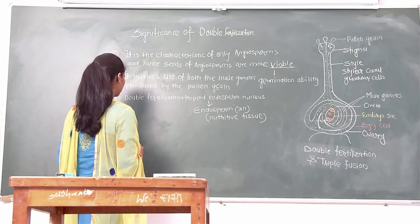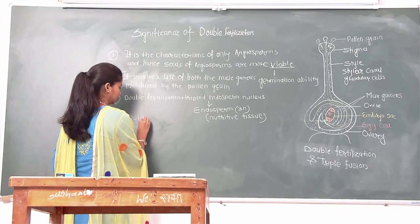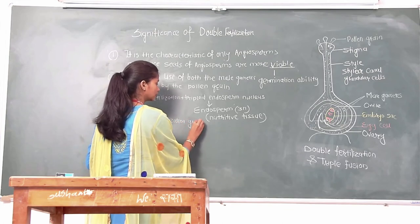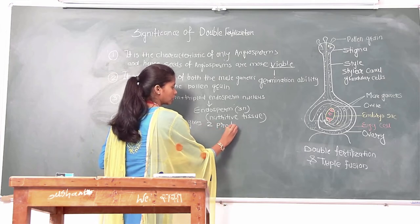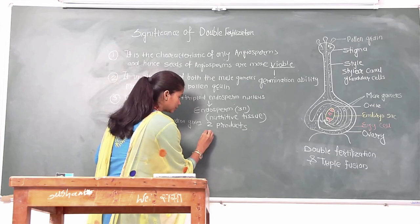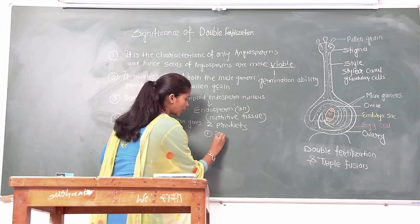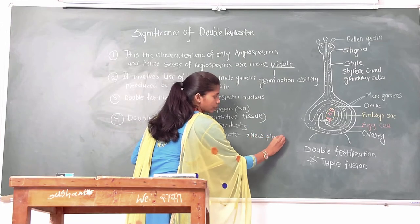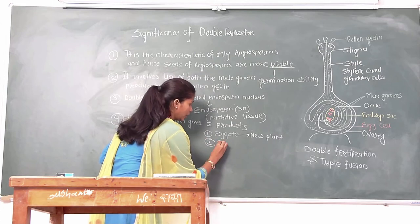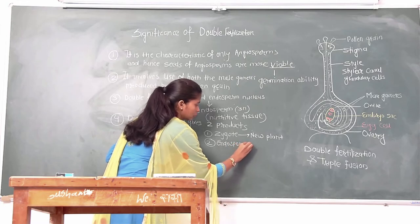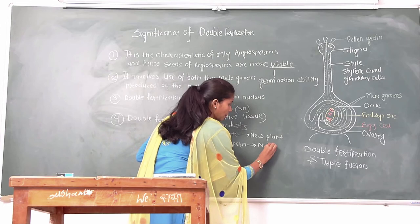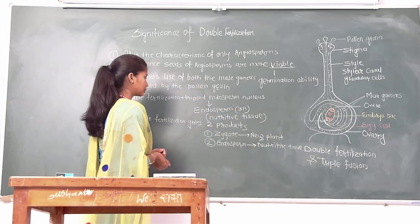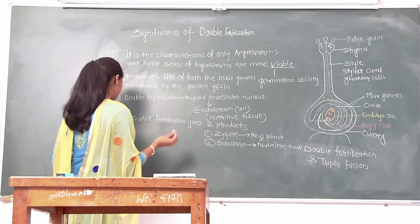The fourth significance is that double fertilization gives two products. First is the zygote, which will further develop into a new plant. And second is the endosperm, which is a nutritive tissue and it provides nutrition to the developing plant. So the endosperm is the product of double fertilization.